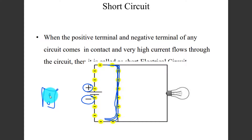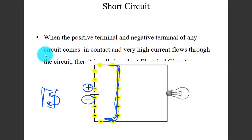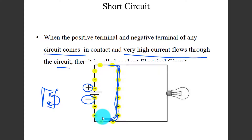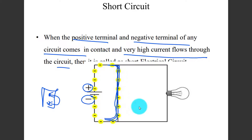When the positive terminal and the negative terminal of any circuit come in contact, very high current flows through the circuit. That is called a short circuit. When the positive terminal and negative terminal are directly connected, it is a short circuit.